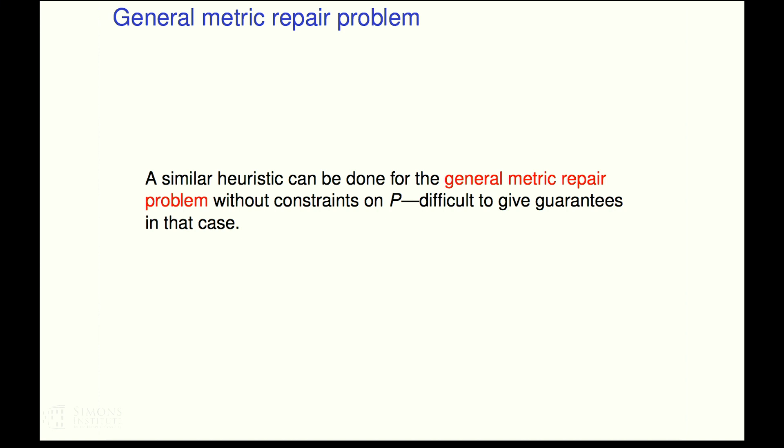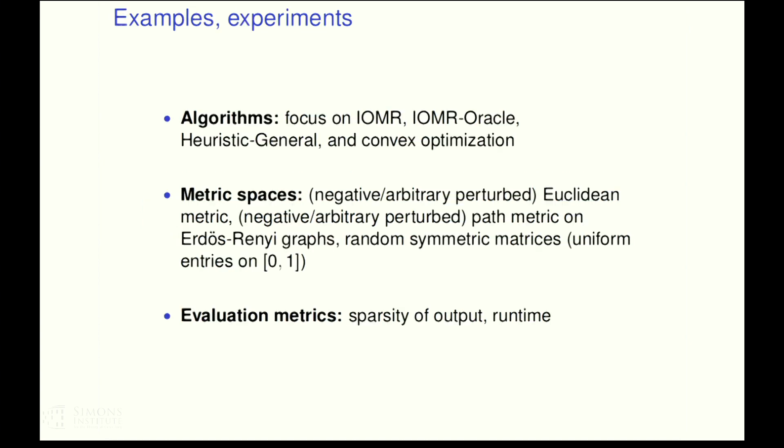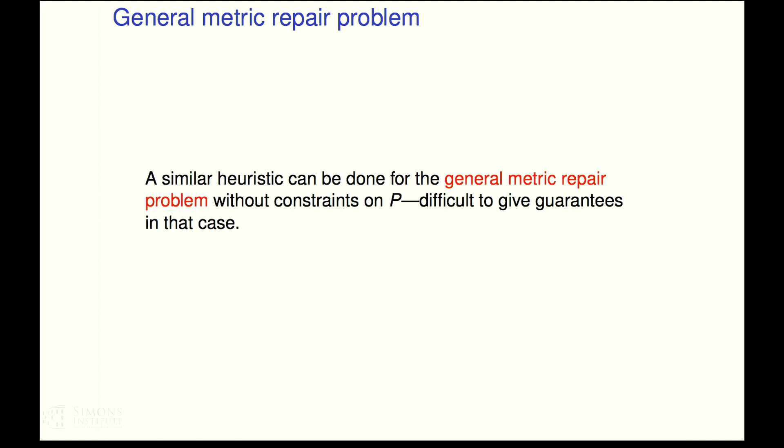And I'm going to skip over this algorithm. It basically uses an Oracle to give upper bounds on the true value of the distances and then uses decrease only metric repair to fix those values that you know to be wrong. And you can guarantee that if you have an Oracle, then IOMR has sparsity equal to the sparsity of the Oracle, which is kind of nice. If you have a good idea of what's broken, then you're not repairing anything more than what you thought ahead of time was broken.